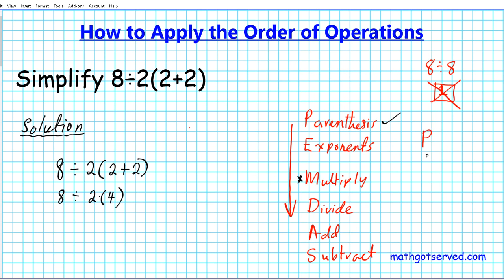Parenthesis first. Exponents second. Multiply and divide from left to right. What does that mean? These two are done at the same time, but whichever one shows up first from left to right is the operation that you carry out first.